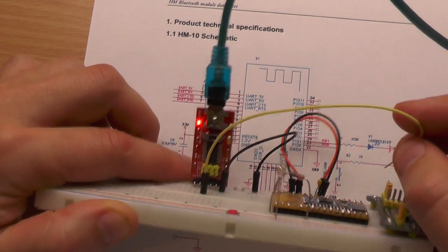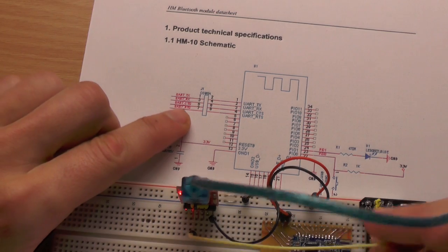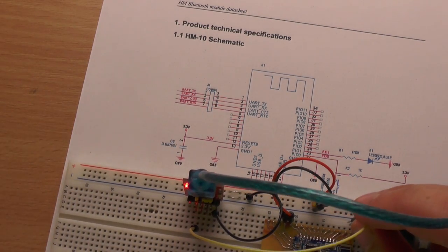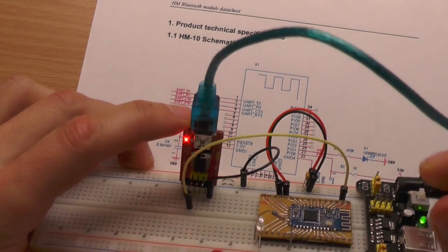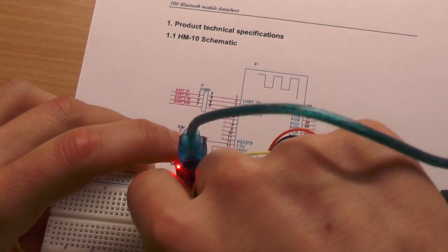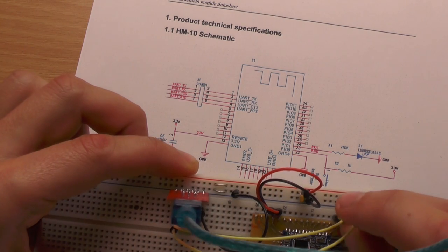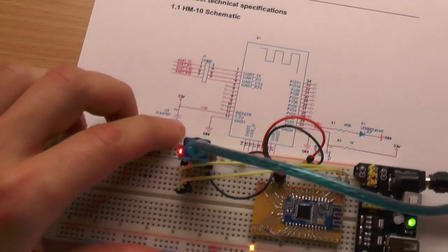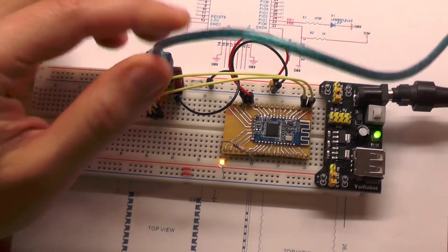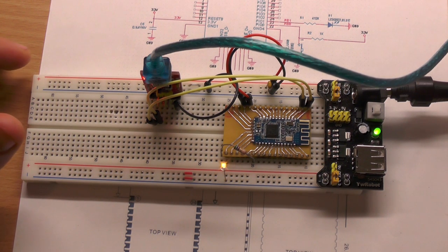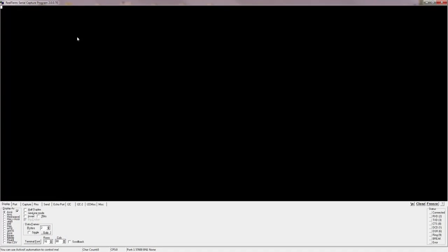This is TX to RX and this one is RX and this is TX. So this is enough to communicate with the module and how this is working we will see on the PC.